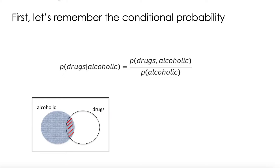What's the intuition behind this formula? Since we are conditioning here on being an alcoholic, it means that we already reduce our universe of possibilities to this gray square. So since we already know that we are alcoholic, then the only chances of being a drug addict is the piece that intersects — the piece where we have the red lines. Because here in the other part of the drugs circle, none of these guys are alcoholic. As soon as we condition on the fact that we know we are alcoholic, we reduce our possible world of drugs only into this piece.